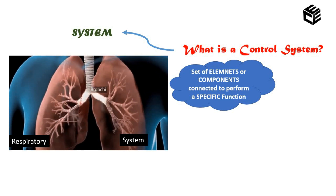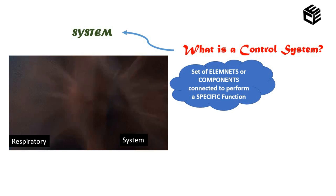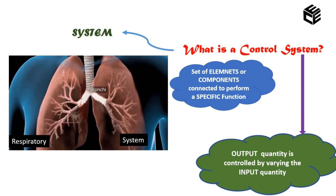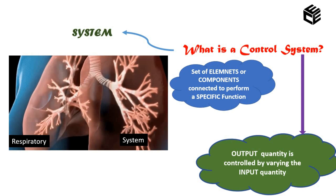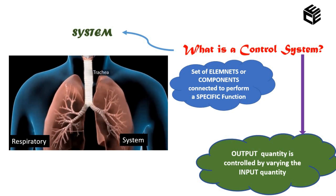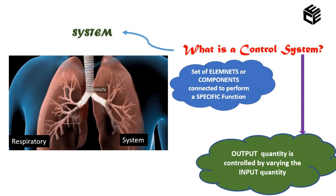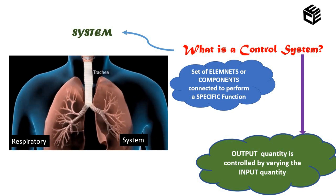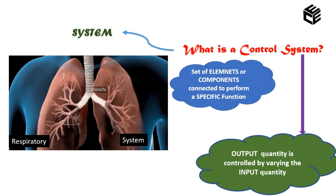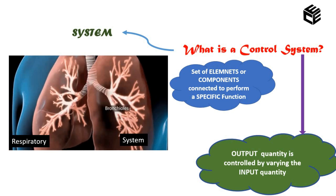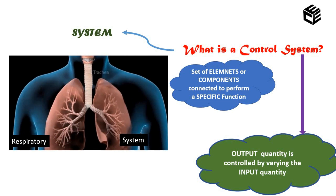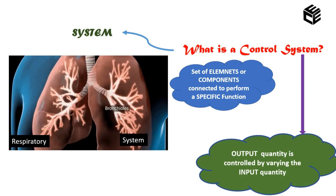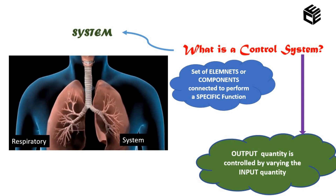From system, we define what is a control system. Control in the sense means we are having control over a system. Consider a classroom as a system. When a teacher enters inside a classroom, the teacher is called the controller. Whatever explanations the teacher gives about the topic is the input, whatever process takes place inside the class is the processor, and whatever the students give as results is the output. So a control system is one where the output quantity is controlled by varying the input quantity.